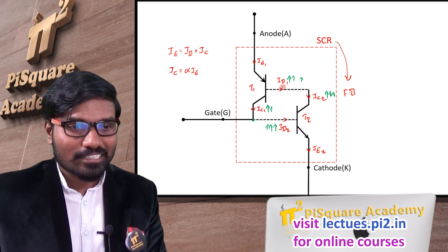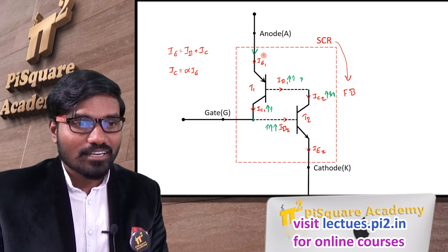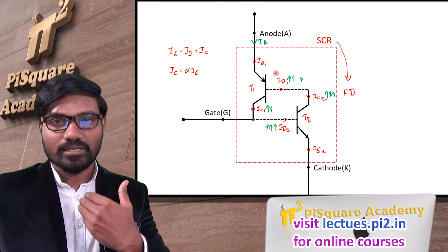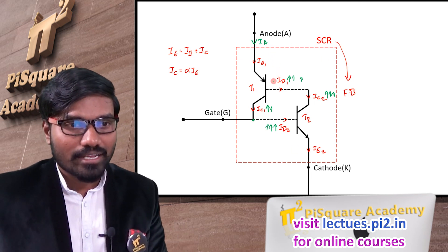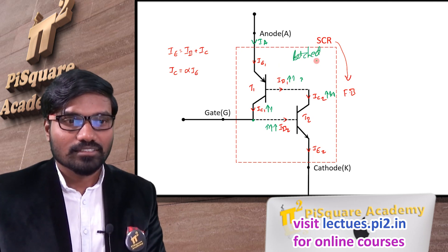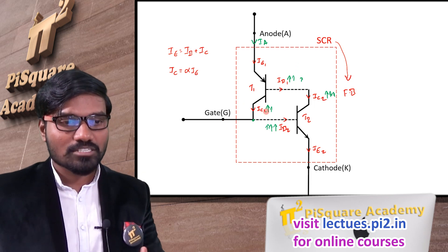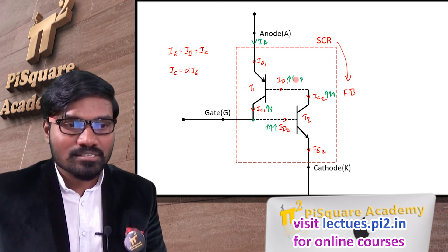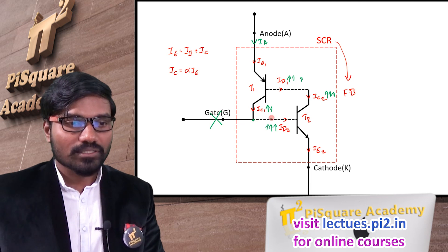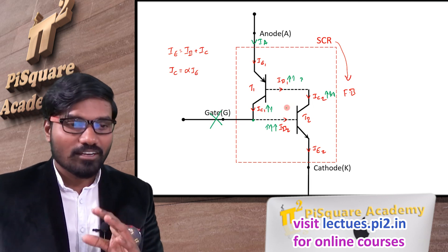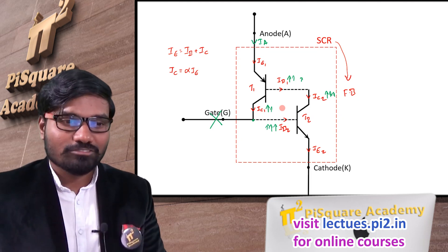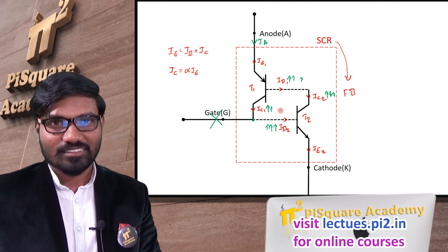Now both transistors are in saturation. The emitter current is the anode current — the anode current is high, meaning this SCR is latched into the on state. Even if the gate current is removed, the cumulative exchange is self-sustaining between the two transistors, so it stays in the on state. The gate terminal has lost control over this cumulative avalanche. That is the beauty of the two-transistor analogy.